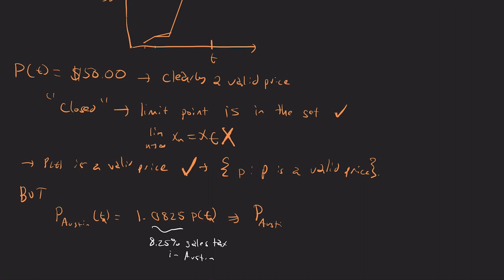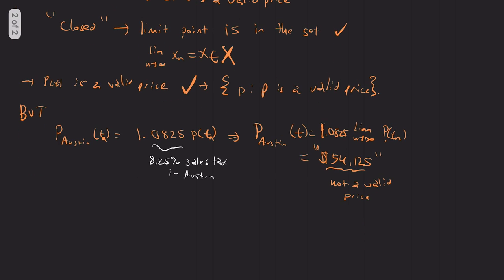So let's just go ahead and put t in here because I've already declared a specific t. So that tells me that p_Austin(t), which is 1.0825 times the limit as n goes to infinity of p(tn), is $54.125. And so this is not a valid price. You can say, well, you round it up and all these things. But yes, that's the thing. You have to round it up. This, the numbers don't work out. So this will be not closed under sales tax.